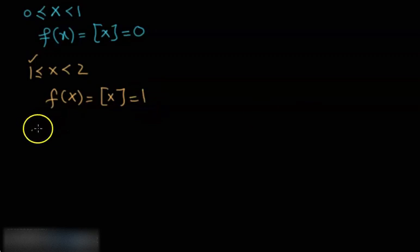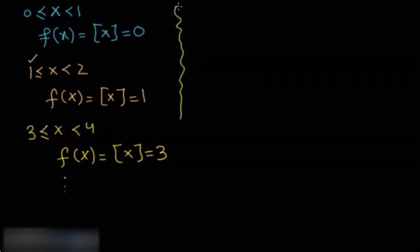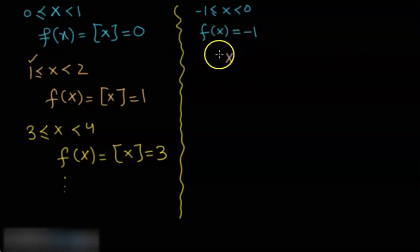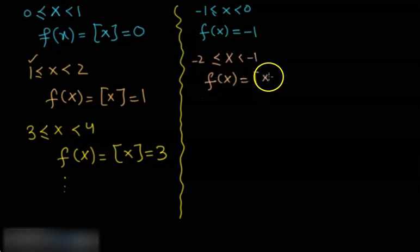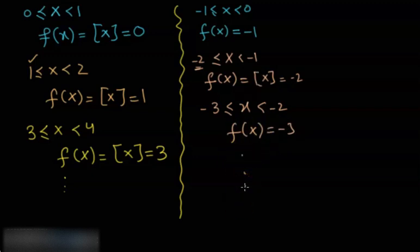Now let's put it into a clear pattern. When x is between 2 and 3, the function gives 2. When x is between 3 and 4, it gives 3, and so on. For negative values: when x is between −1 and 0, f(x) = −1. When x is between −2 and −1, f(x) = −2, because −2 is the greatest integer on the left. When x is between −3 and −2, f(x) = −3, and so forth.